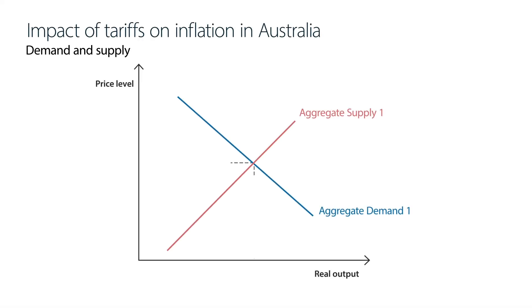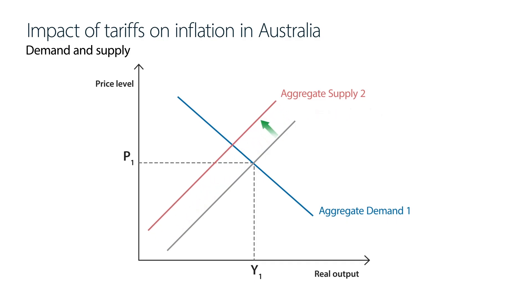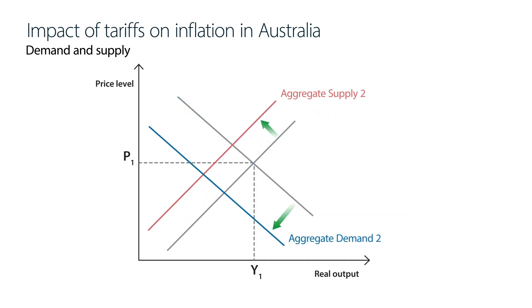The key thing to note is that the demand and supply effects are pulling in opposite directions — one will decrease inflation and the other will increase it. While the supply channel will push up prices, we think the demand channel will be stronger, represented by a larger shift in the demand curve. So overall, we expect these tariff-related effects to put a bit of downward pressure on prices.